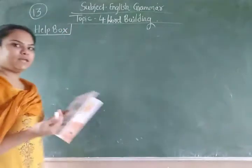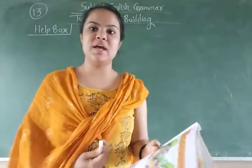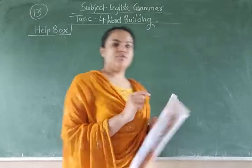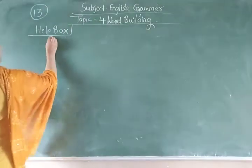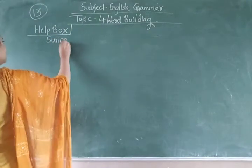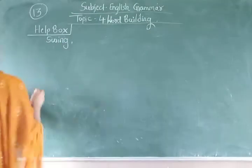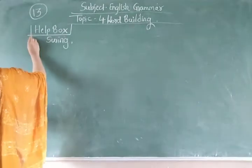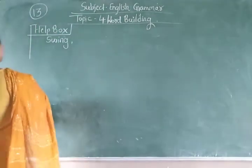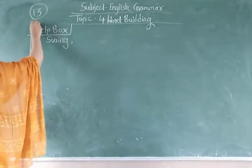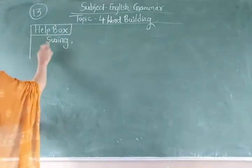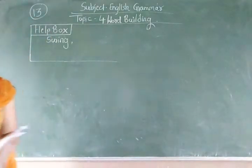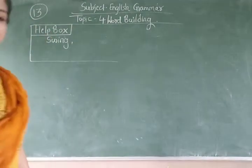First, all of you read the words. Sabse pehle hum words ko read karenge. So I am reading the word and you have to repeat after me. The first word is S-W-I-N-G, that is called swing. Swing means jhula — a swing. You can see this. S-W-I-N-G, swing.